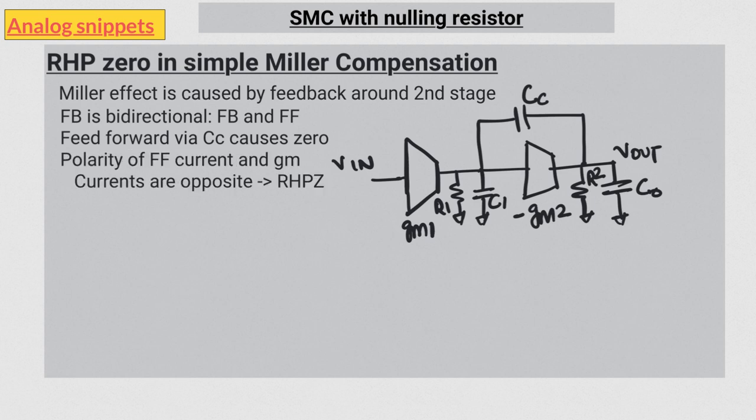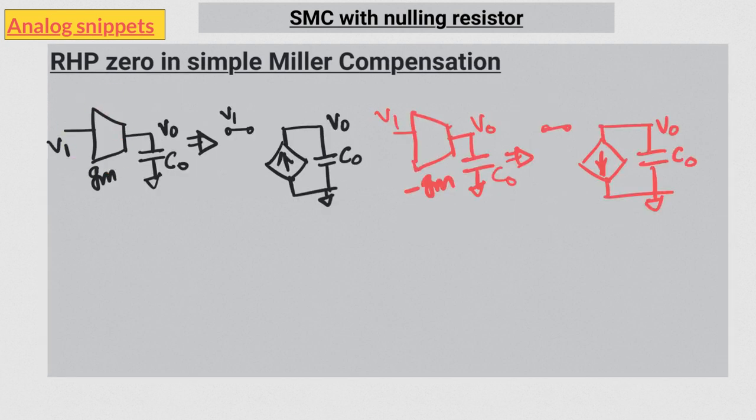There is a more intuitive way to understand it if we simplify this circuit. We will take out everything else and just focus on the zero. Let's consider a gm followed by a capacitor.